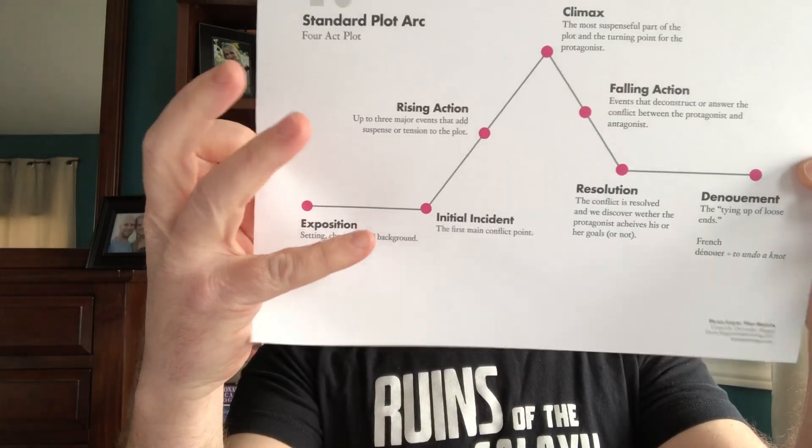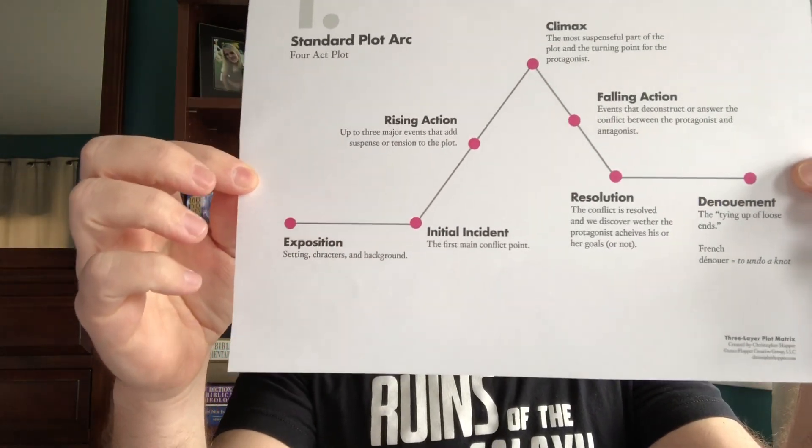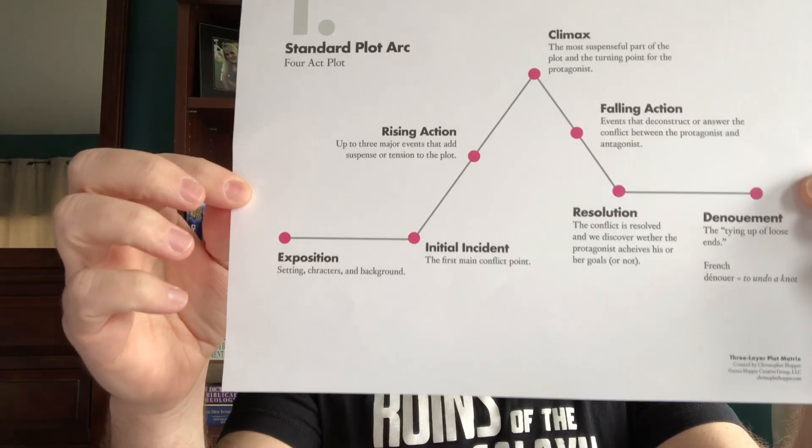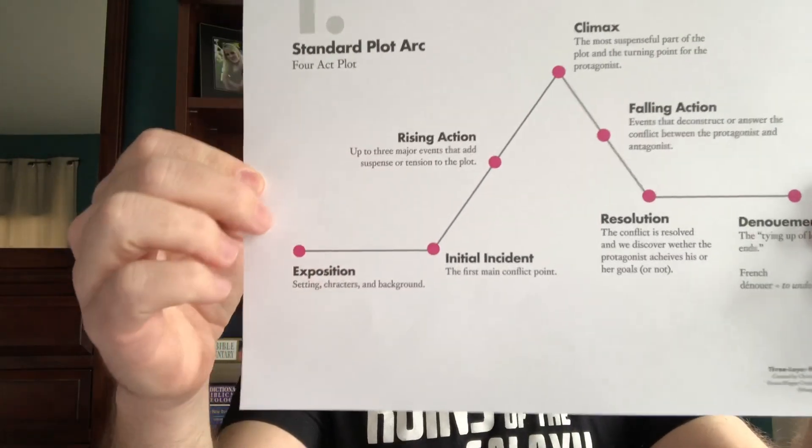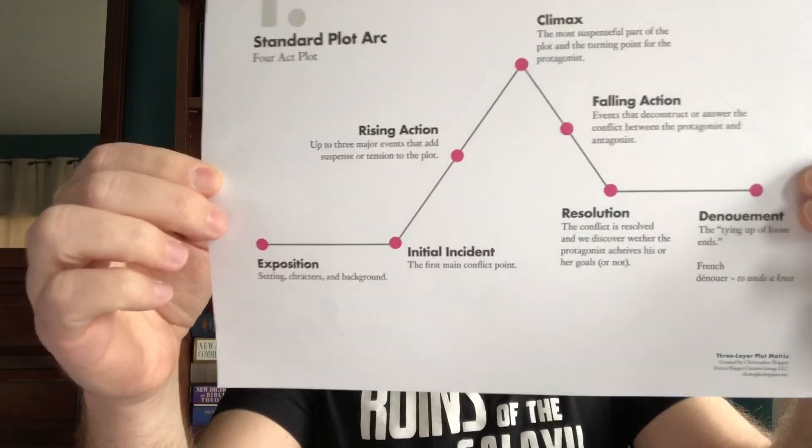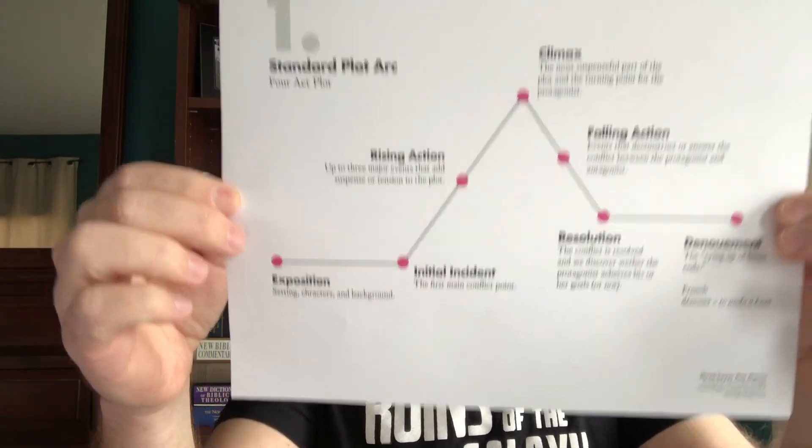The second thing that happens is the initial incident, which is the first main conflict point that your protagonists get involved with — it's the bang that happens in the story. The next part is the rising action, which I say includes up to three major events that add suspense or tension to the plot. These are just the fun things that happen — this is how you really get to start messing with your protagonist, and as an author and a writer, that's a lot of fun to do, even though it's somewhat sadistic.